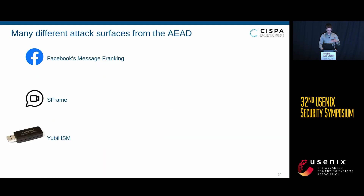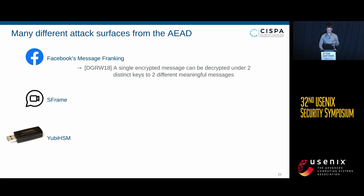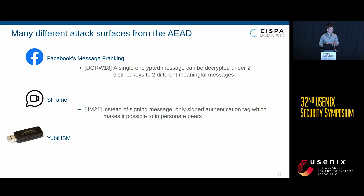To give examples from the previously named protocols: in Facebook message ranking, it was possible for an AAD-encrypted message to be decrypted under two different keys, receiving two different meaningful messages — essentially a collision. For S-Frame, they split the AAD construction into encryption and authentication parts and only worked with the authentication part, which led to an attack. The UBHSM was an example of reusing nonces for AADs being bad.